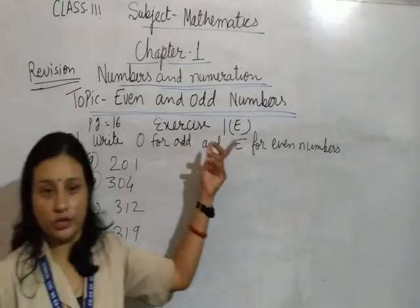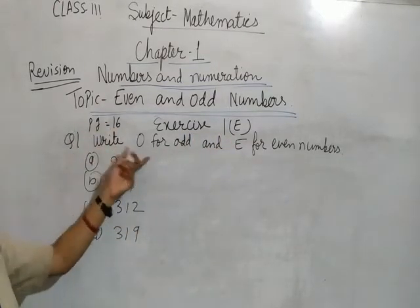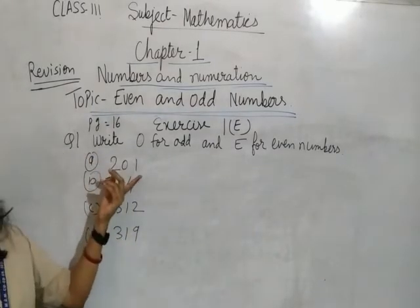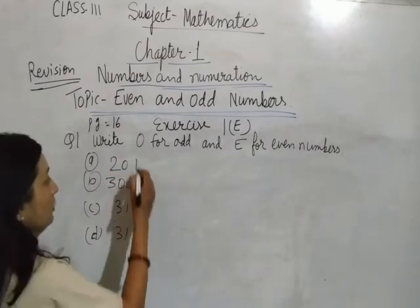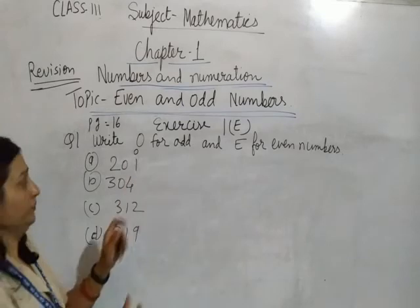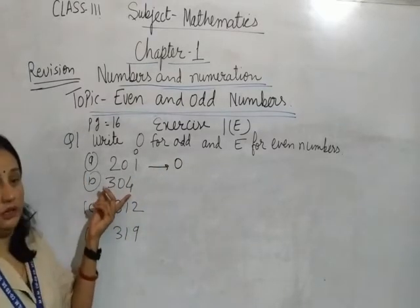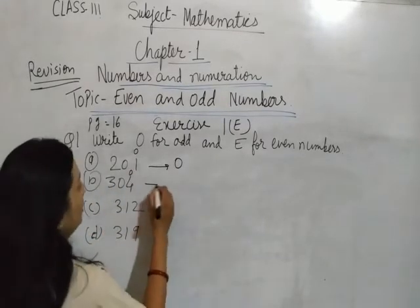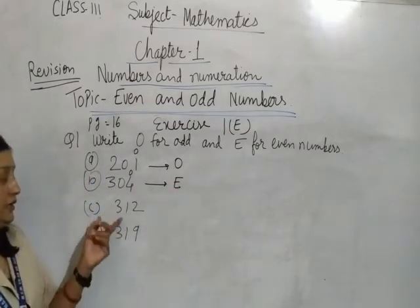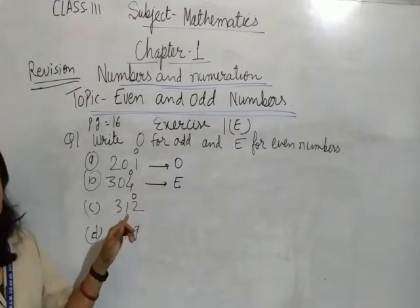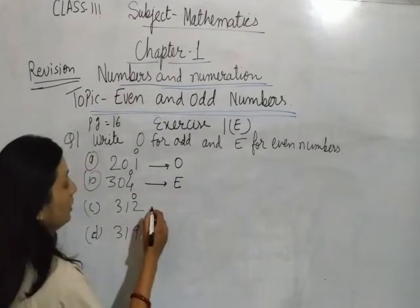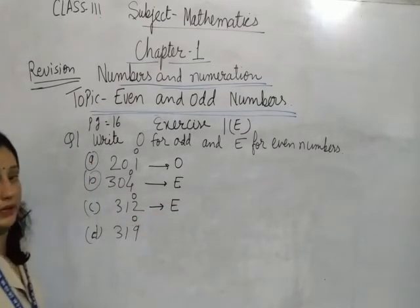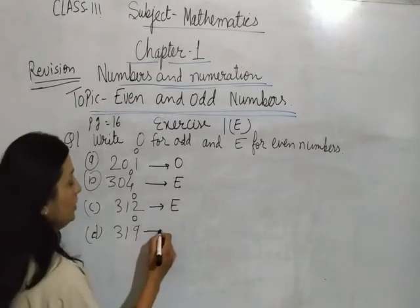Exercise on page number 16: Write O for odd and E for even numbers. First, 201 — check the ones value: ones value is 1, which means odd, so write O. B: 304 — ones value is 4, which means even, so write E. C: 312 — ones value is 2, which means even, so write E. D: 319 — ones value is 9, which is odd, so write O.